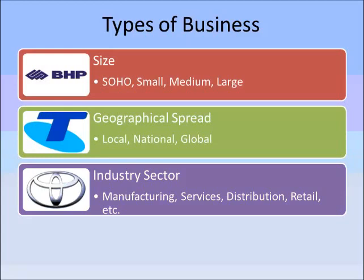A third way to distinguish types of businesses is the industry sector that they operate in. For example, whether they operate in manufacturing like Toyota, making cars or making a product. Whether they operate in services, which would be somewhere like Telstra, which is actually delivering internet access or telephone services.